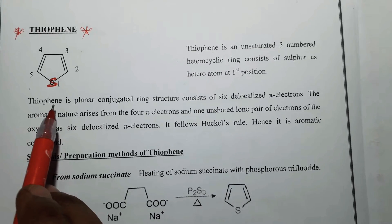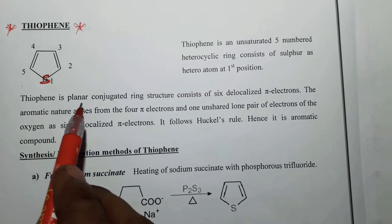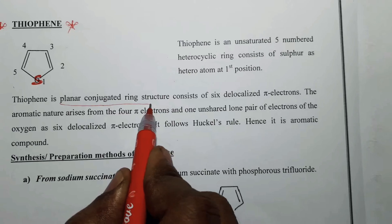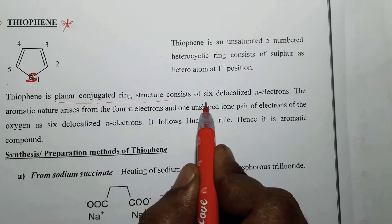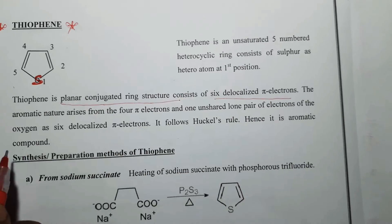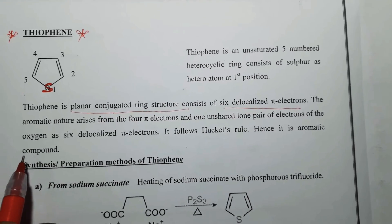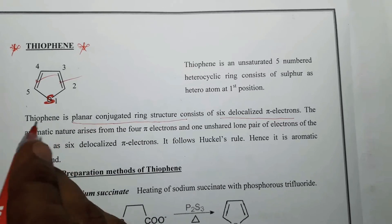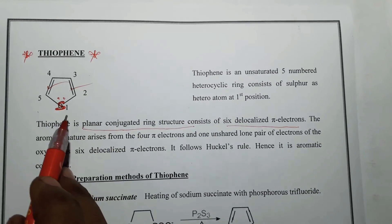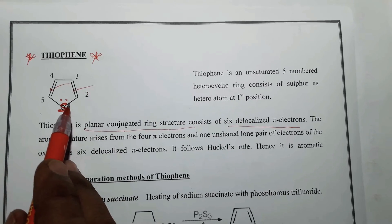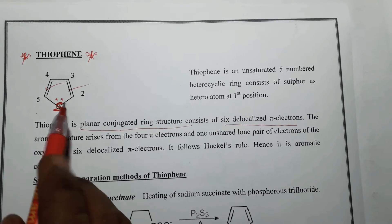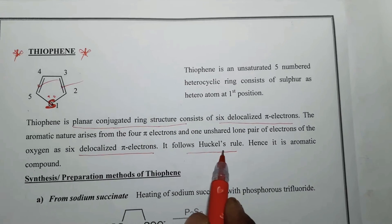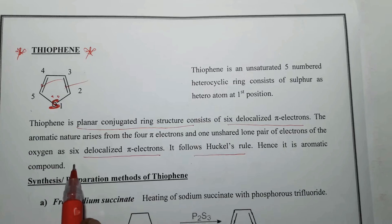Thiophene is considered as an aromatic heterocyclic ring system because it possesses a planar conjugated ring structure and consists of 6 delocalized pi electrons. Those 6 delocalized pi electrons arise from the 2 double bonds present in the ring, as well as 1 unshared lone pair of electrons present on the sulfur. So, totally 6 delocalized pi electrons — hence it follows Hückel's rule and is considered as an aromatic heterocyclic ring system.